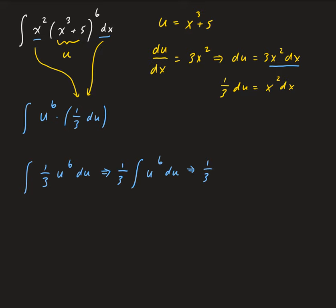So this is going to be equal to 1/3 times u to the 7th over 7.